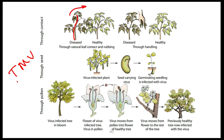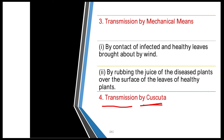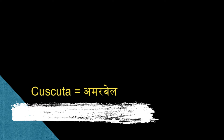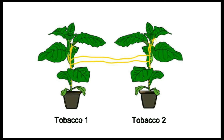Transmission by Cuscuta — Cuscuta is a phanerogamic plant parasite. When Cuscuta infects two plants simultaneously, the viruses transmit from the infected plant into Cuscuta, and from Cuscuta into the healthy host. For example, citrus mosaic virus.